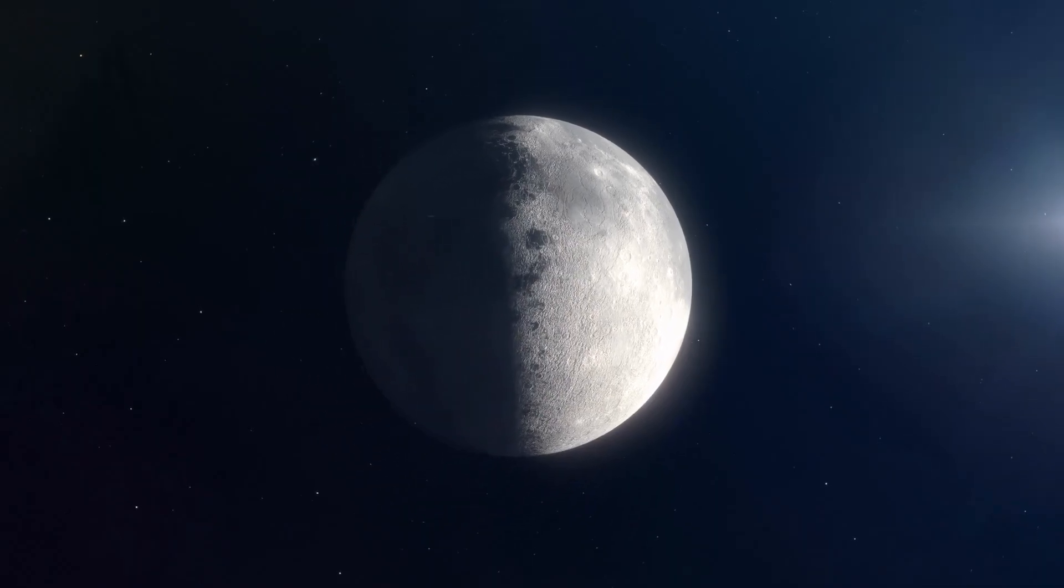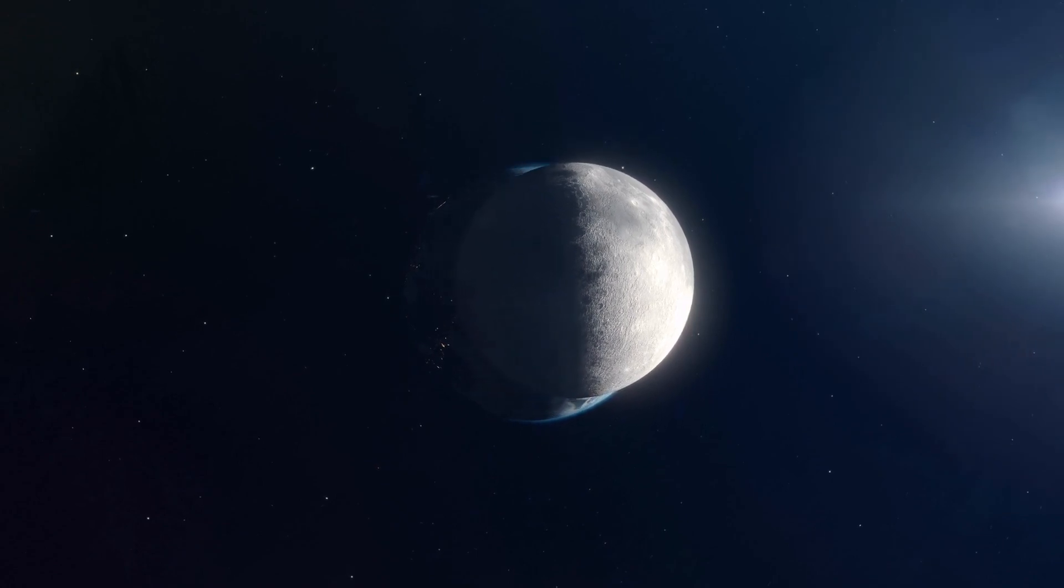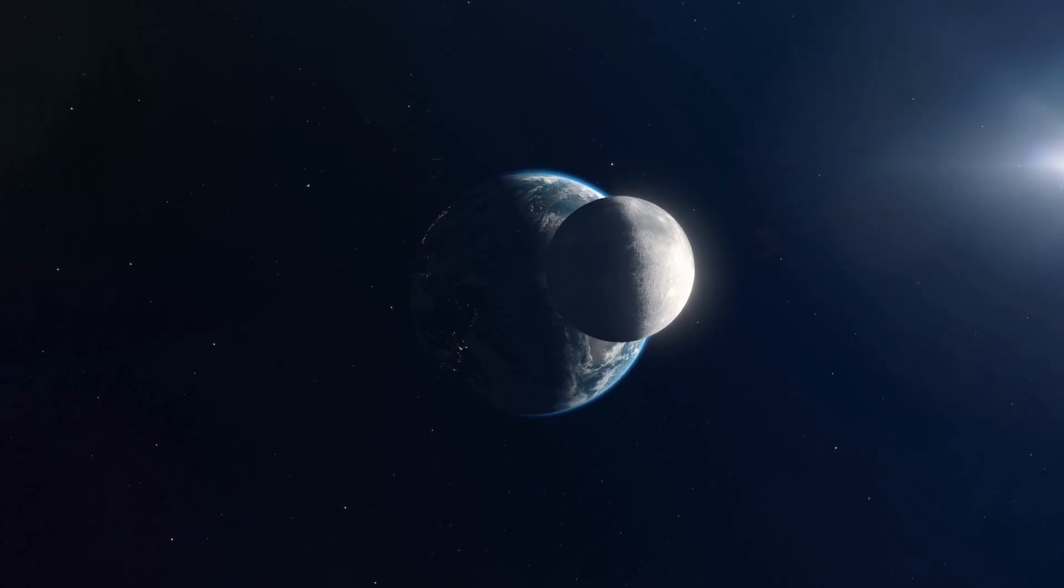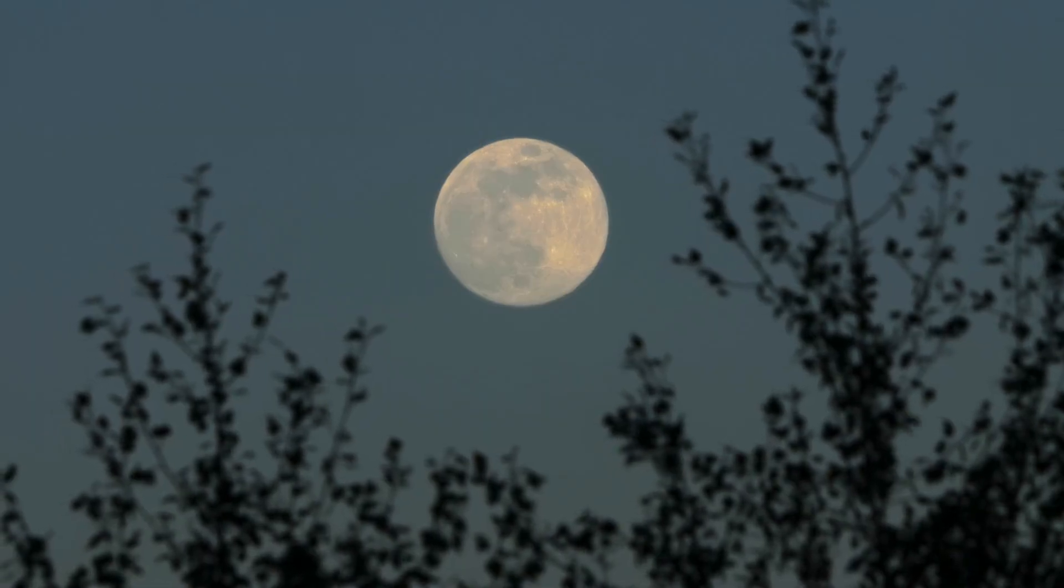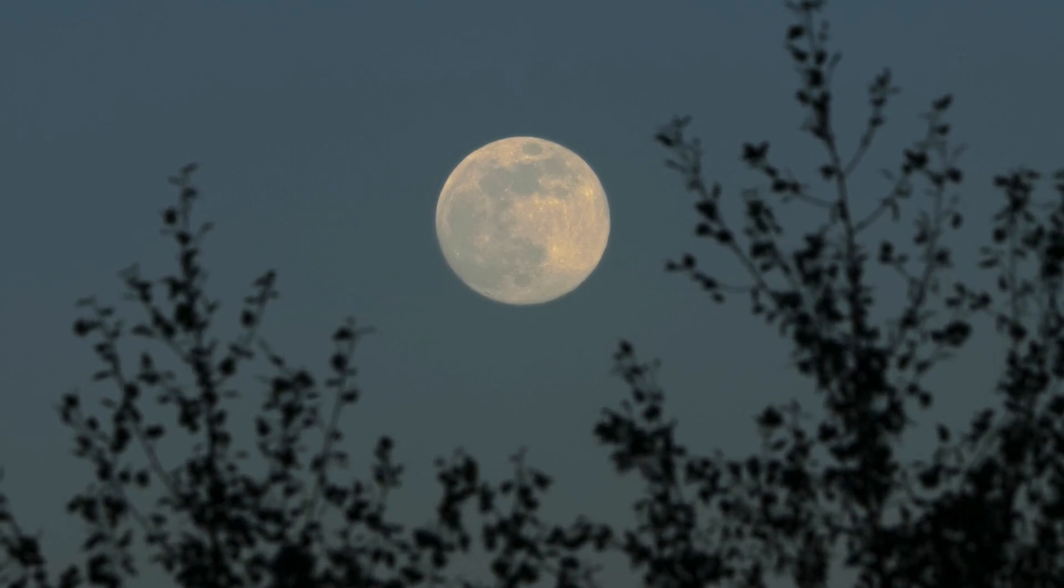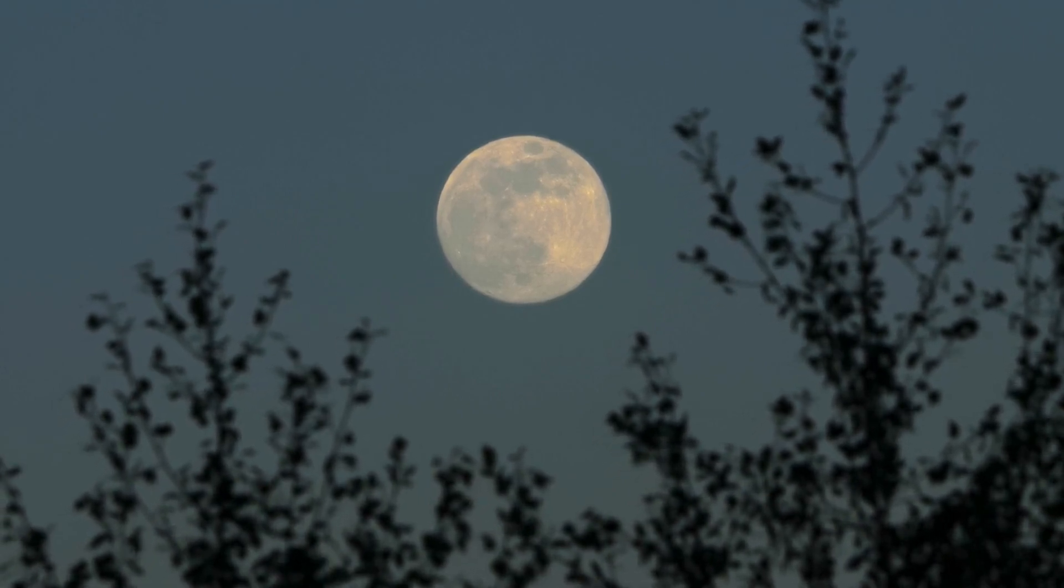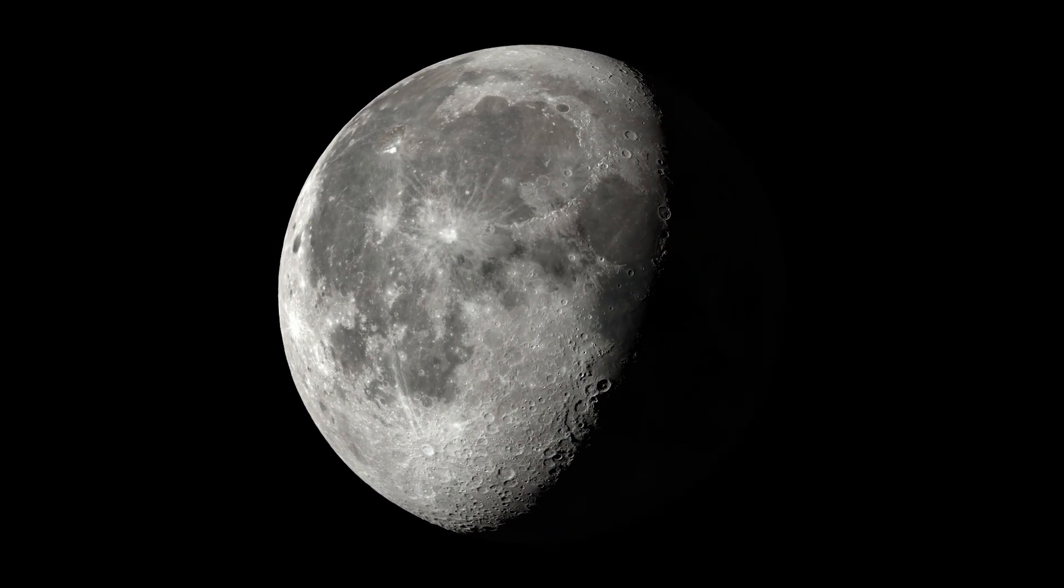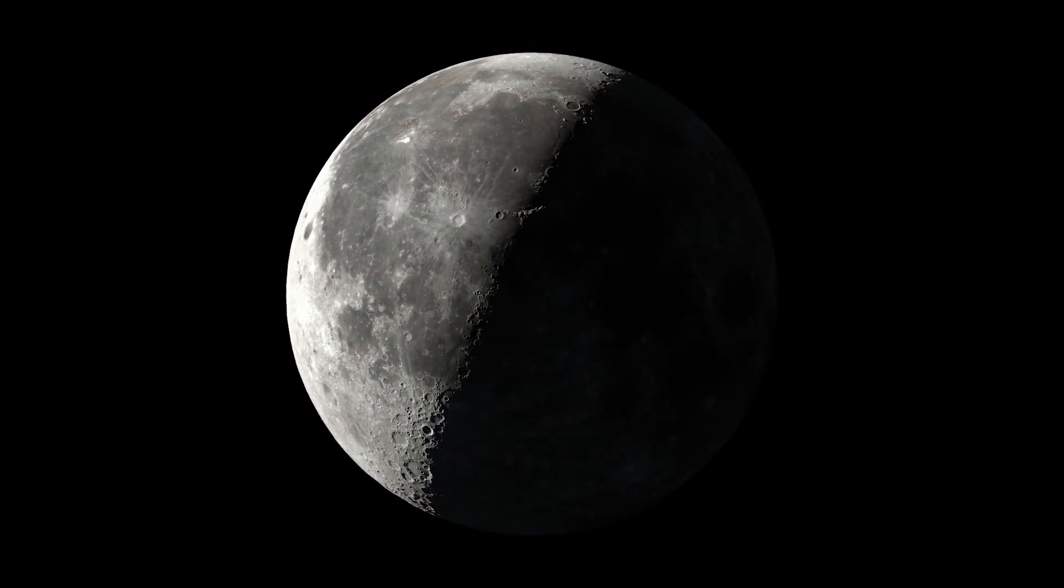On our home planet Earth, we have one moon that gracefully orbits around us. When the Sun's light shines on our moon, we can see it lighting up the night sky. This makes Earth unique, as it is the only planet in the entire solar system with just one moon.